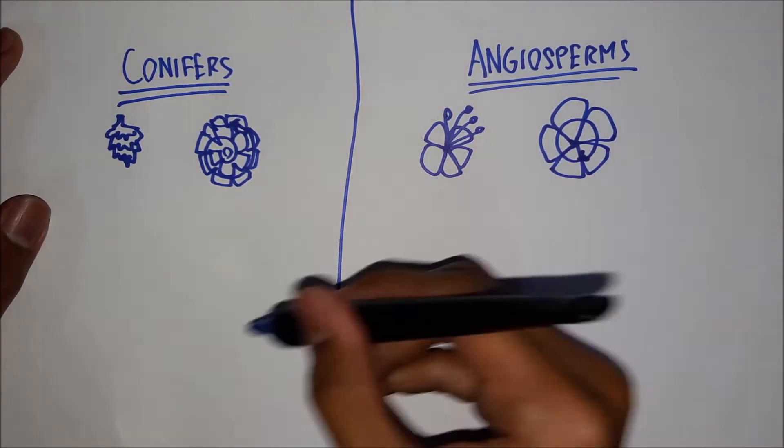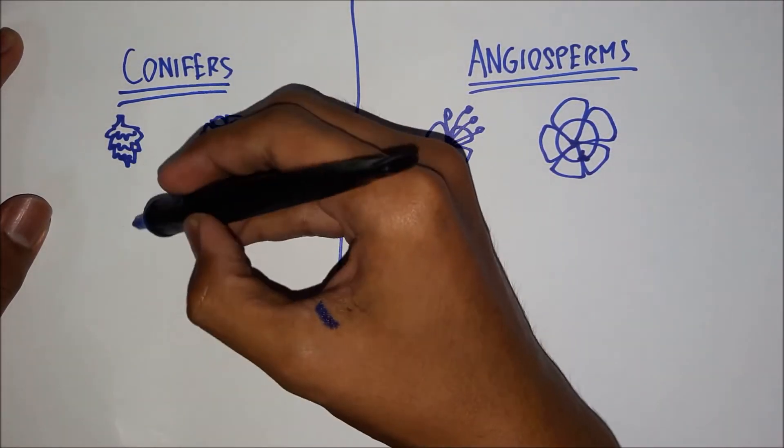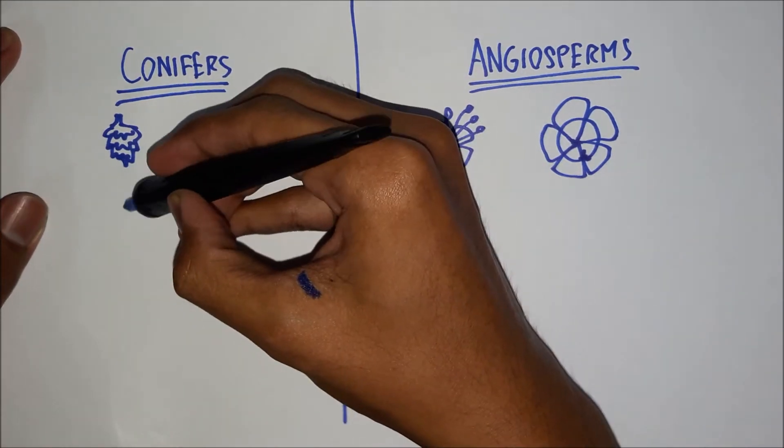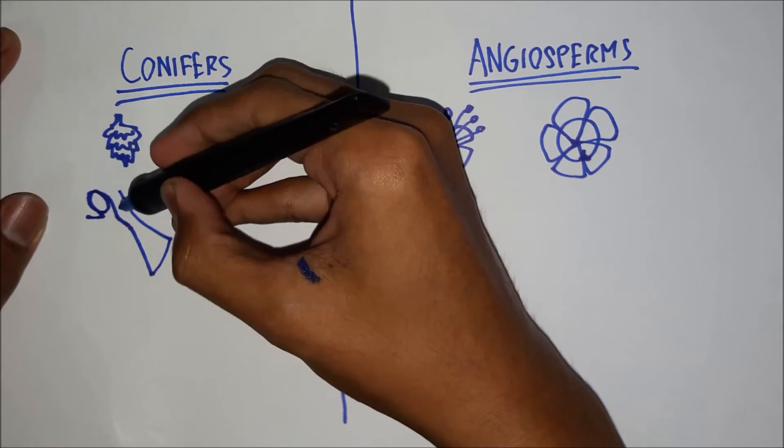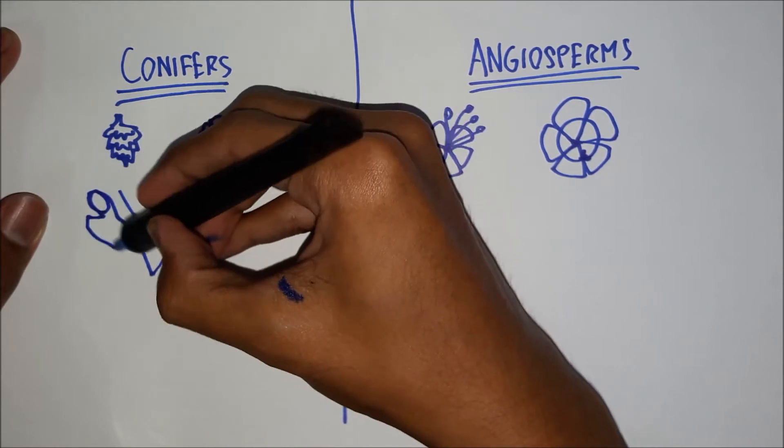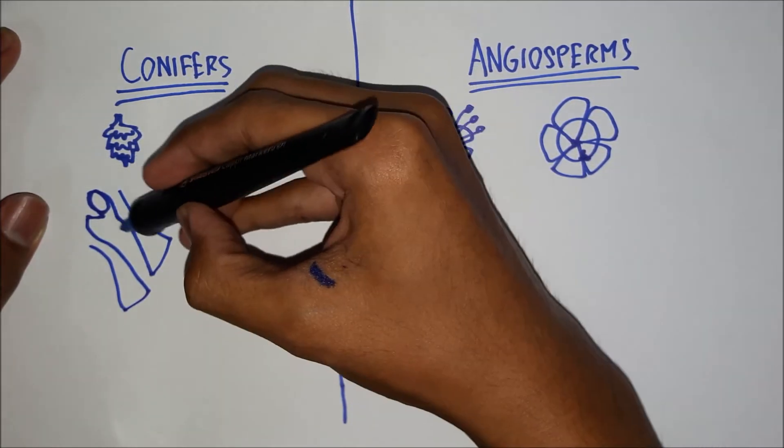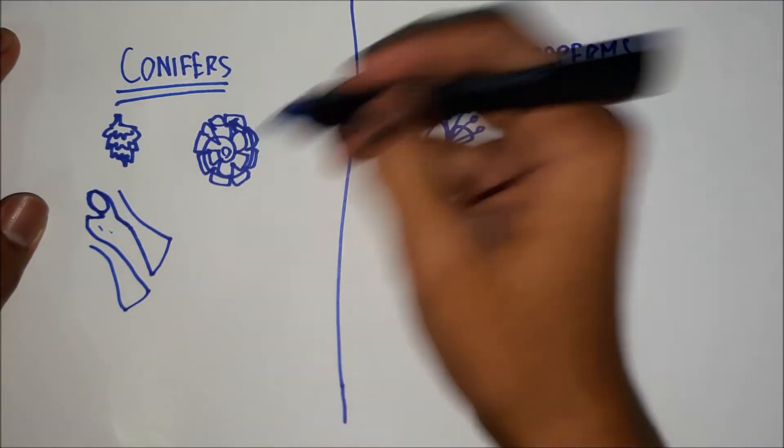Now, thirdly, in conifers, you just zoom in on one of those cones like that. You'll notice that the ovule is completely exposed. We call this a naked ovule.